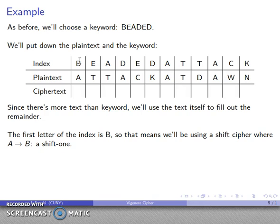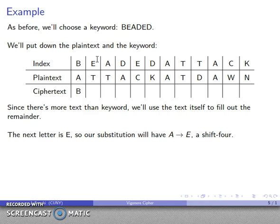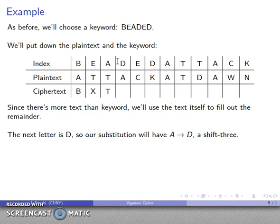Working through the Vigenère auto-key encryption: the first plaintext letter is A, the first index is B — meaning a shift-1 cipher — so A is encrypted as B. The next index letter is E, a shift-4 cipher, so T is sent to X. The next index is A, meaning A goes to A itself — a shift zero. Next index D means A is sent to D — a shift three — so that A gets encrypted as D. The rest of the plaintext is encrypted in this fashion.